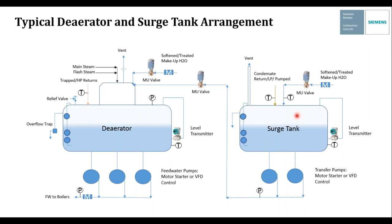Because surge tanks are atmospheric, they won't pressurize the vessel — steam will just vent up the vent pipe. Other things that come into the surge tank include low pressure or pumped condensate returns — I always mark those in gold because I like to think of condensate as liquid gold. We measure the temperature of the makeup water, the condensate, and the surge tank itself. We also have a level transmitter and some level switches — possibly a high level, a low, and a low-low — with the low-low typically shutting the pumps off.